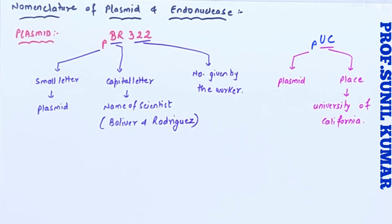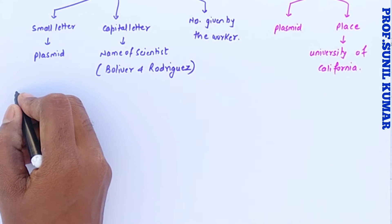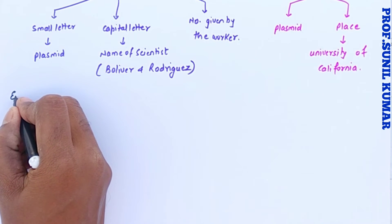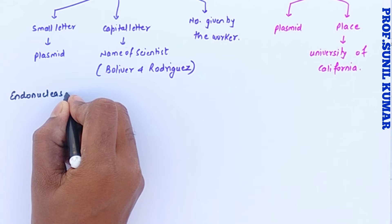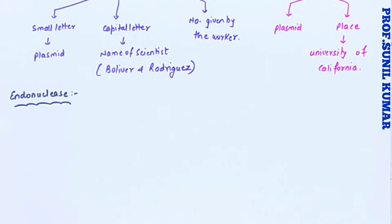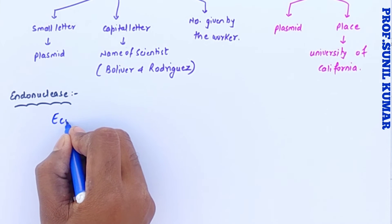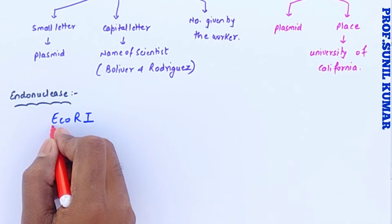Next, we will look at endonuclease. When you talk about endonuclease, we know it is a restriction enzyme — the enzyme used to cut DNA at a specific site. 'Endo' means 'in' and 'nuclease' relates to nucleic acid. One example is EcoRI.